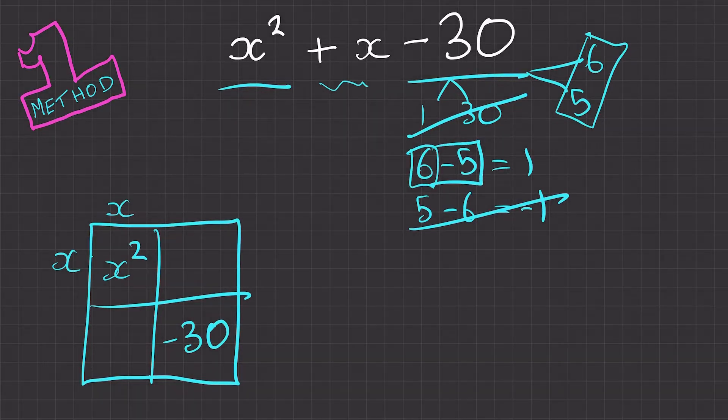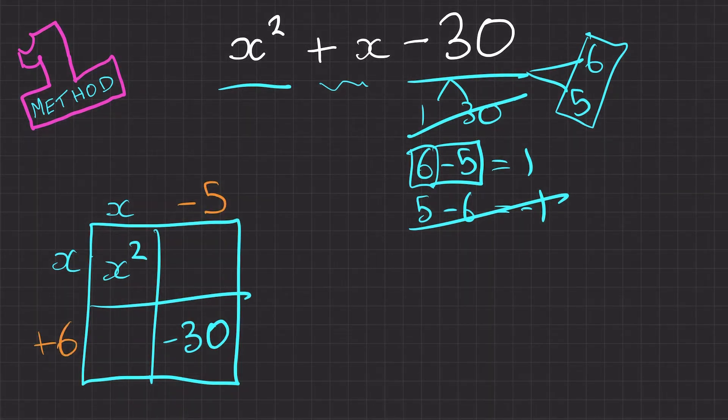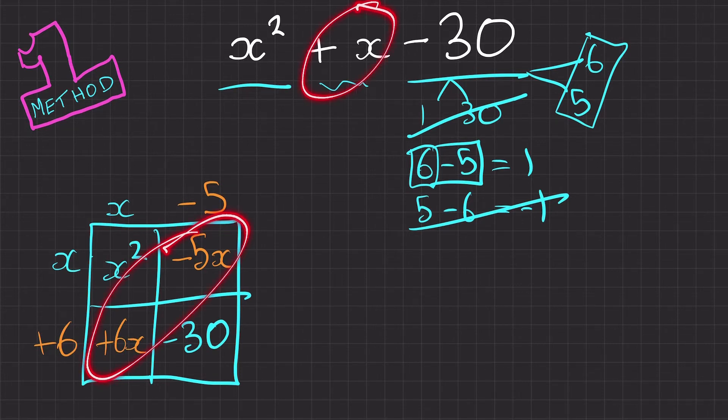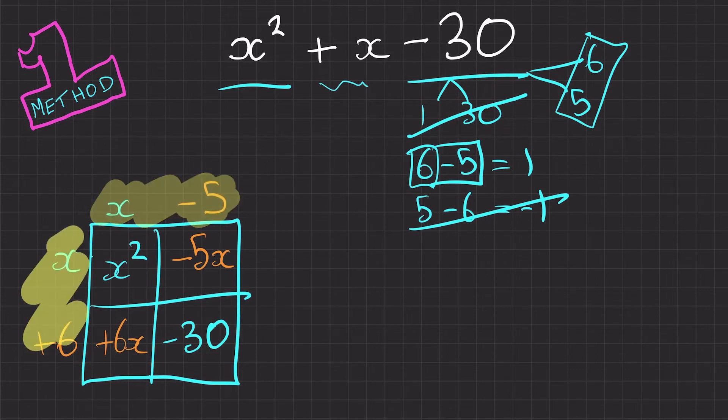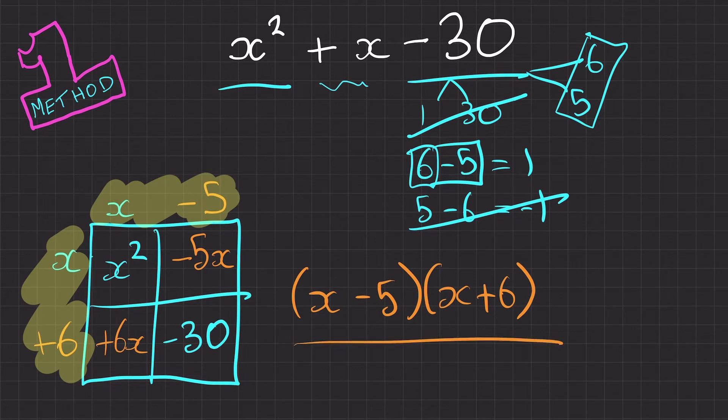So we can input this into our grid, so we've got minus 5 and plus 6. So then we're left with minus 5 times x equals minus 5x and plus 6 times x is plus 6x. Remember these two values add together to get this value here. Finally, we've got these two at the top and these two at the side, so we're going to write them out. So we've got x minus 5, x plus 6. When you multiply them together, you'll get the quadratic expression we started with, so we've got our final answer.